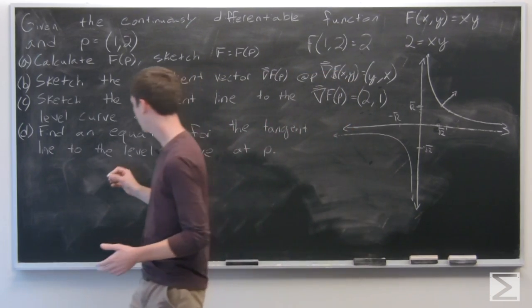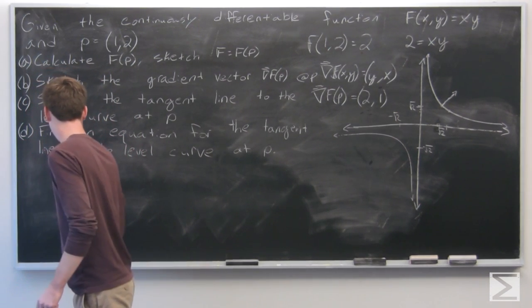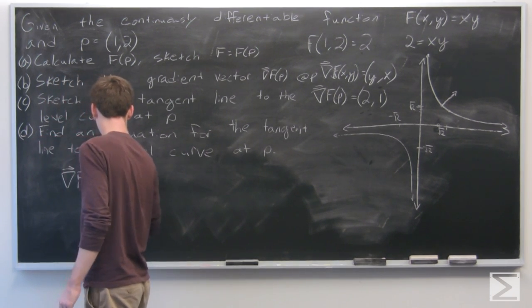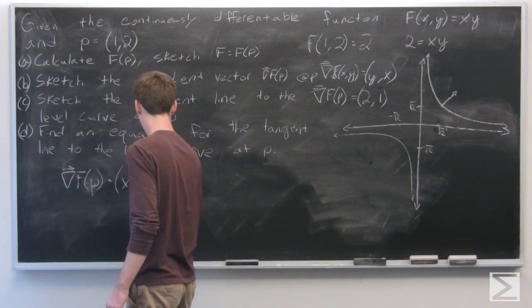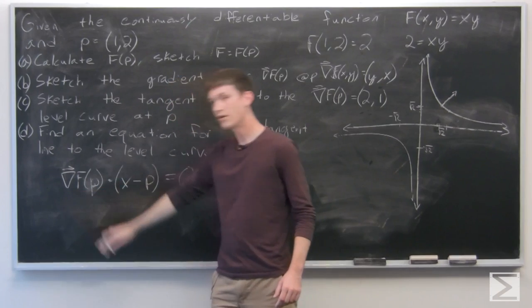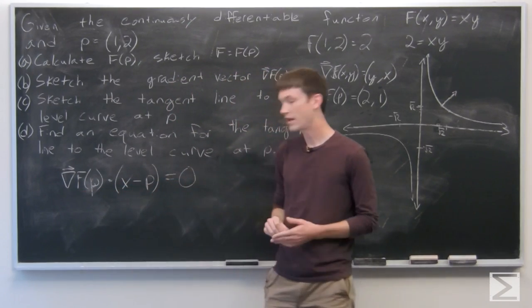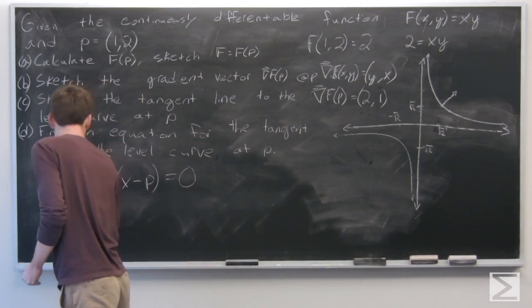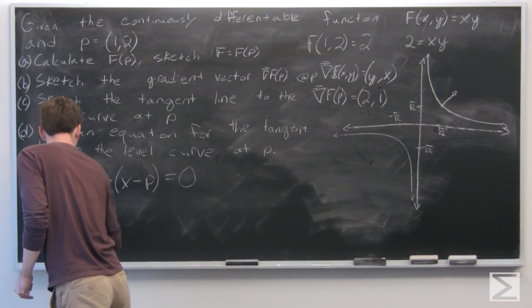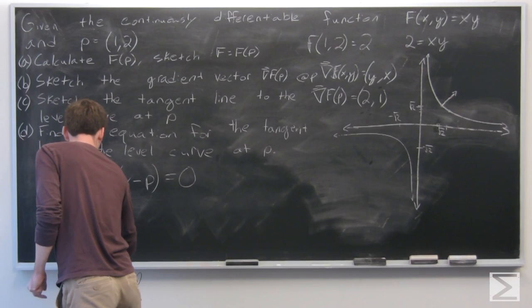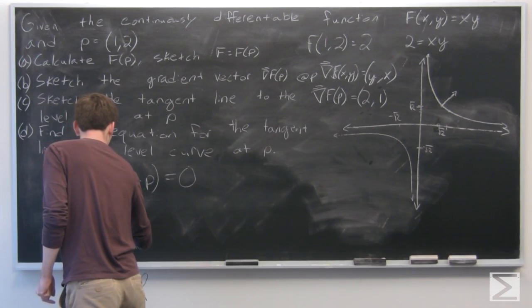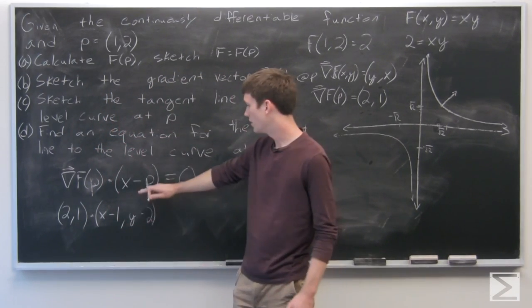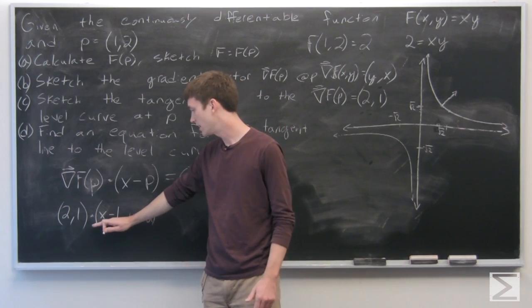And so the tangent line is defined as the gradient of f at p dotted with (x - p). We know the gradient of f at p is (2,1). So the gradient of f at p dotted with (x-1, y-2). So p is (1,2), so x minus p is (x-1, y-2) equals 0.